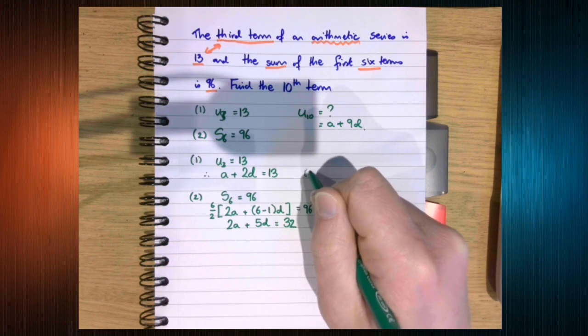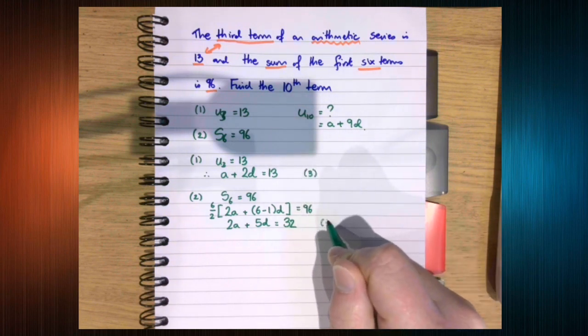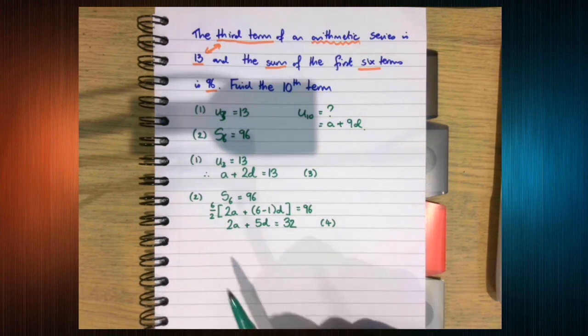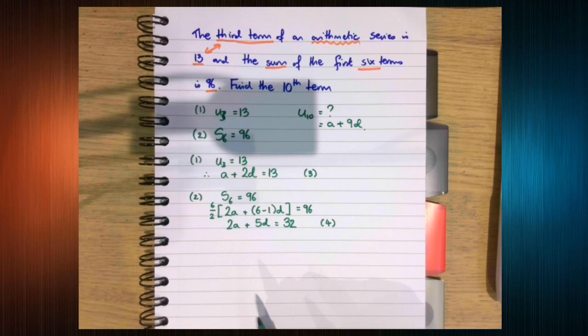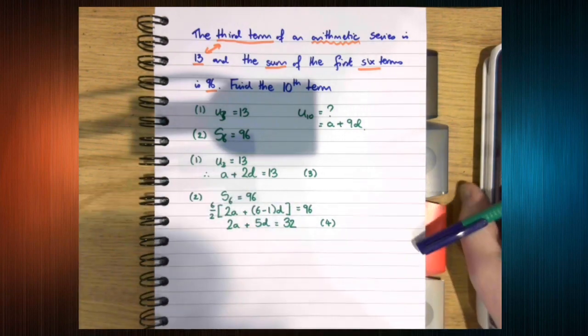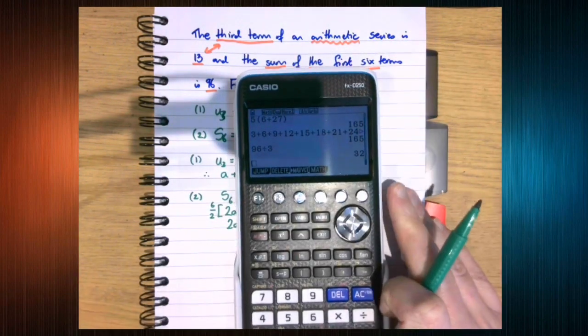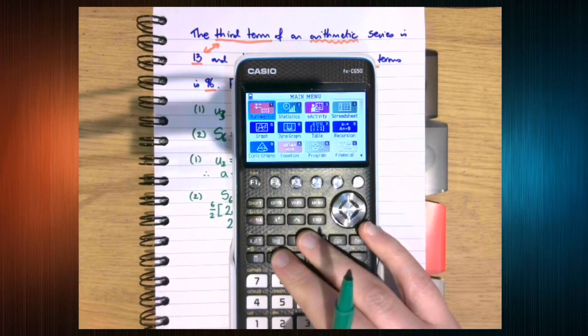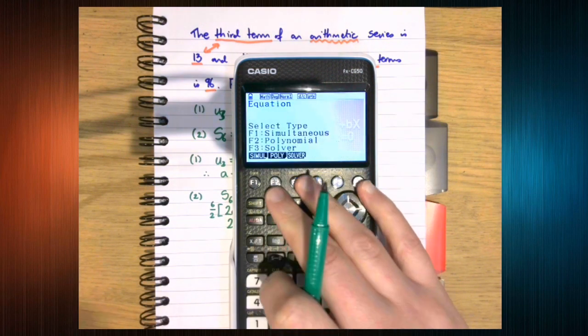So 2a plus 5d equals 32. Use simultaneous equations to find a and to find d. So I'm going to be using the graphics calculator, because that's the one I've got to hand. The functions are more or less the same, there's just more of them on this.